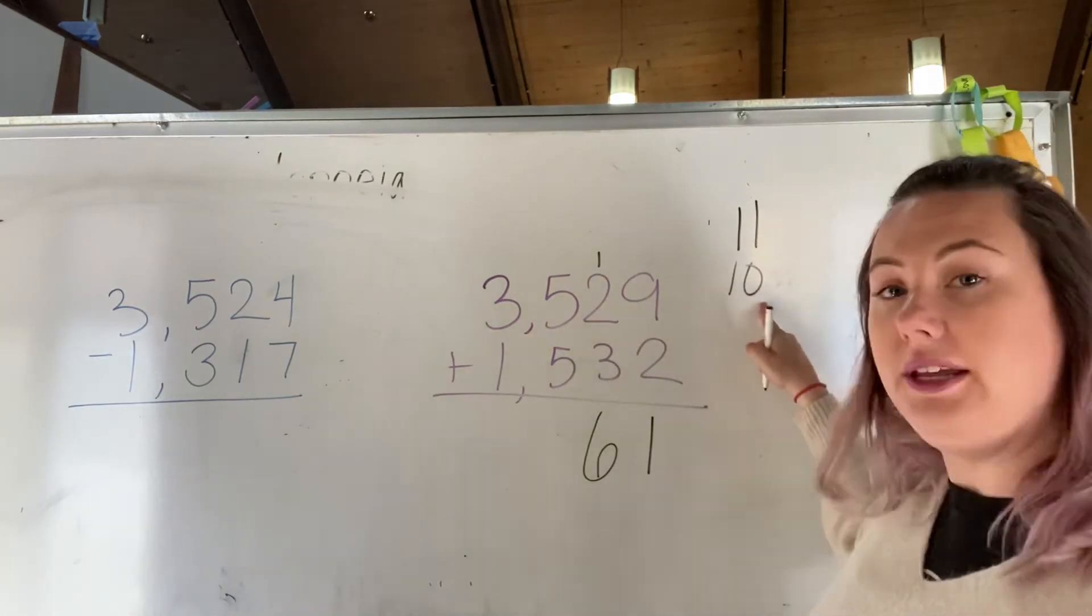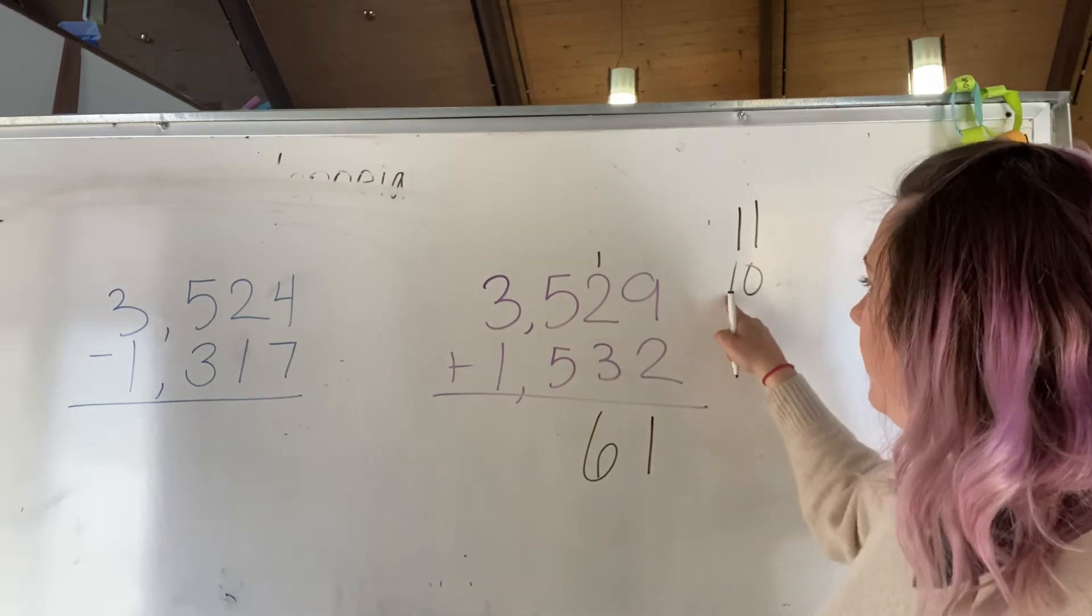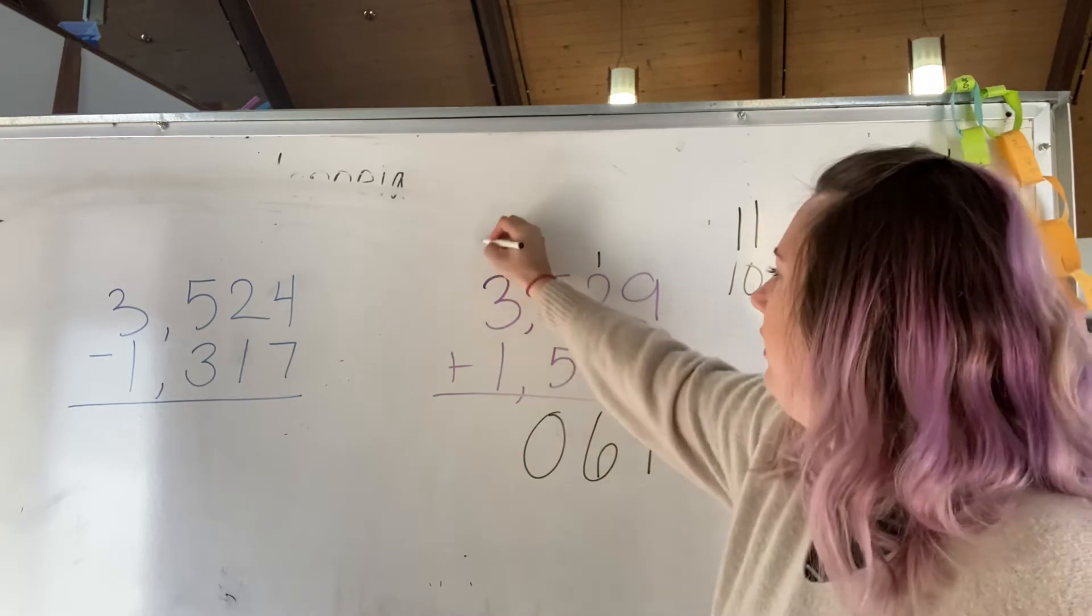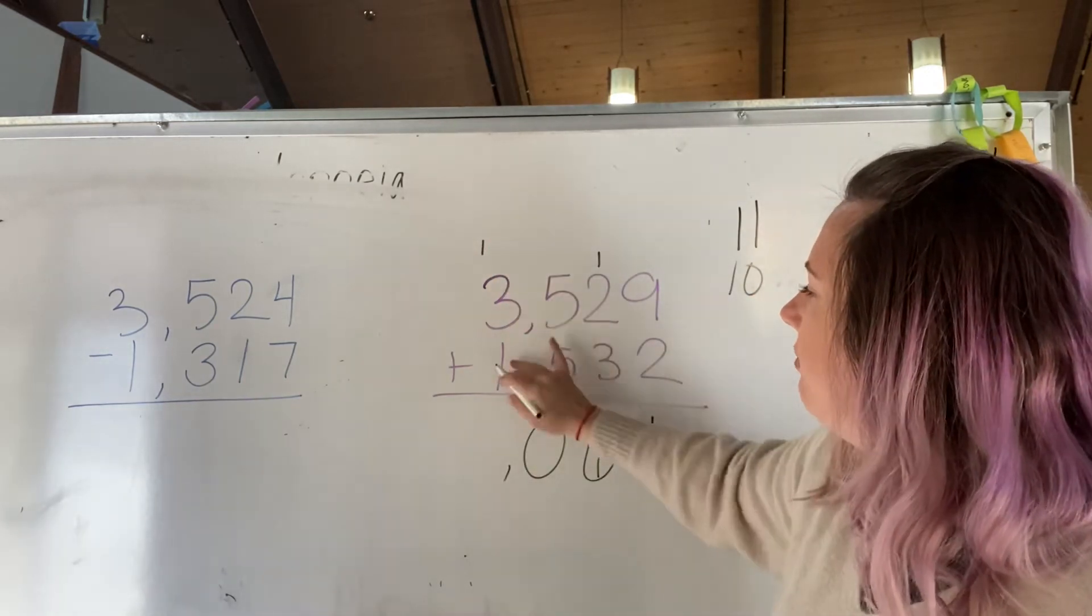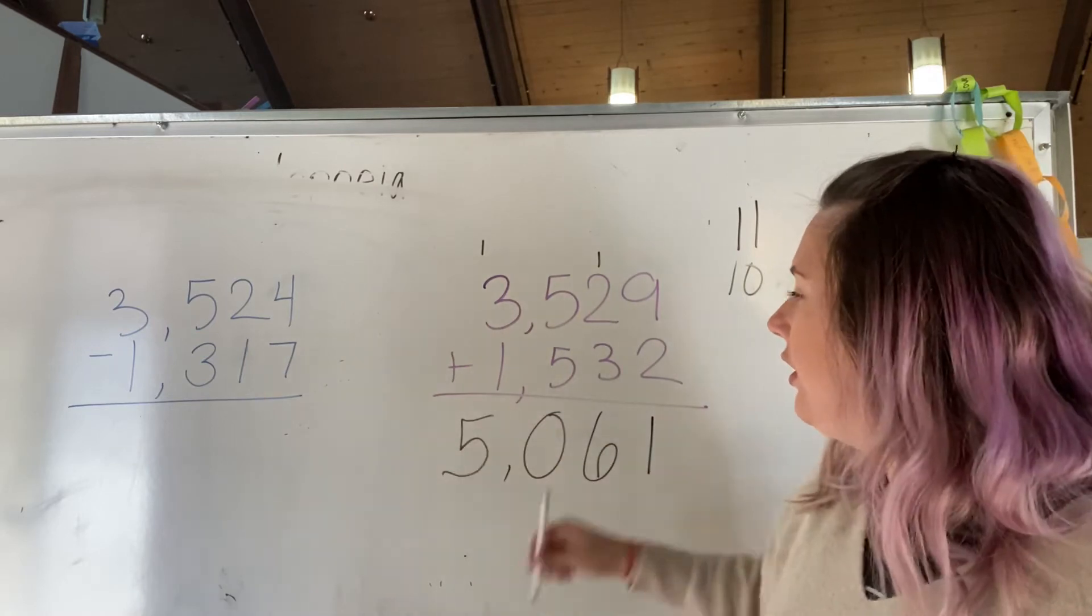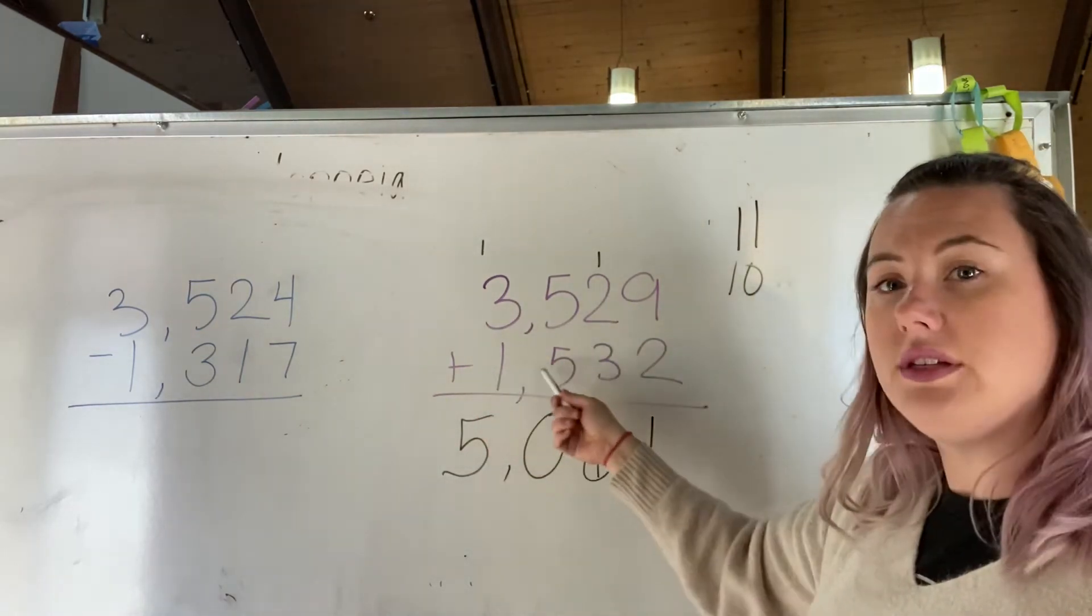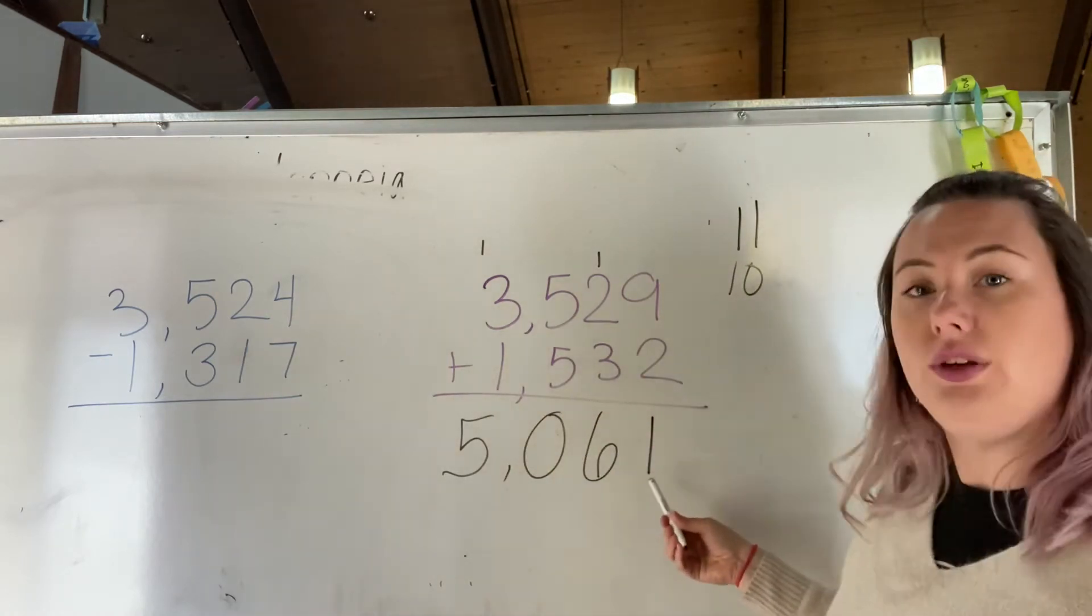And again, 10 being a two-digit number. 10 hundreds, which is 0 hundreds and 1,000. So we put our 0 here and our 1 exchange, and we add 3 plus 1 plus 1. So our math problem 3,529 plus 1,532 equals 5,061.